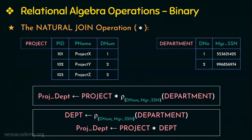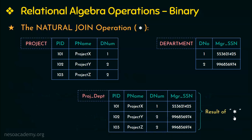This is the result of the natural join, where dnum is called the join attribute. Each project is combined with its controlling department. Natural join does not use any comparison operator and does not concatenate the way a Cartesian product does. It must have at least one common attribute between the two relations and displays results where the values of the common attributes are the same. Natural join is essentially an equi join followed by the removal of the redundant duplicate attribute.